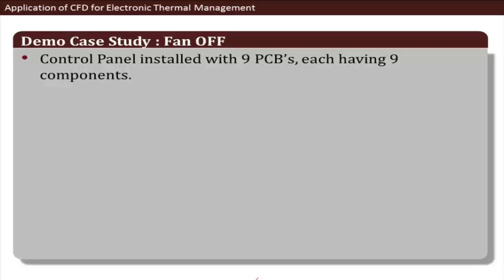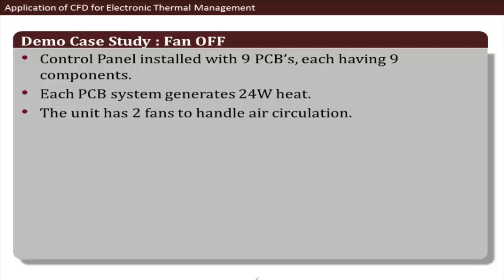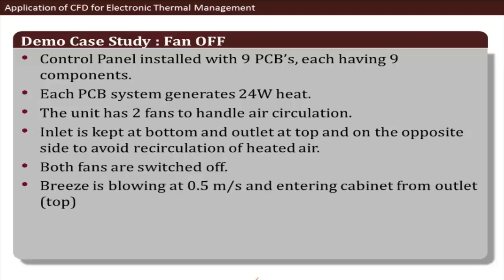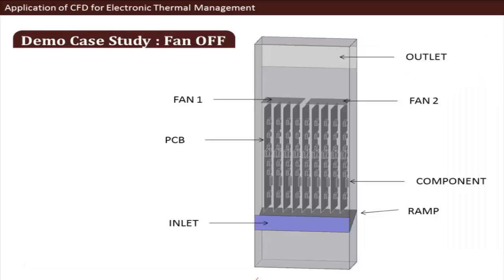The model is a control panel with nine PCBs, each having nine components. Each PCB generates 24 watts of heat. The unit has two fans, but they are switched off to simulate the worst case. The inlet is at the bottom and the outlet at the top to avoid recirculation. A natural air breeze of 0.5 m/s enters from the outlet side. The domain shows the nine PCBs with components, two fans, and a ramp used to redirect air through the PCB racks.